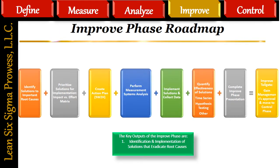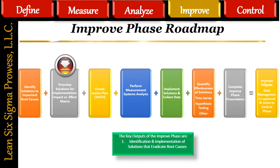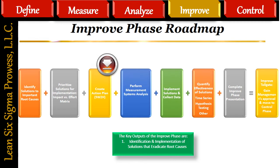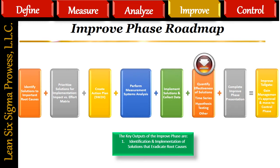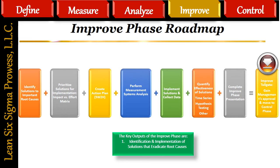The Improve Roadmap is a summary of all of the steps required to complete the Improve phase. Step 1: Identify solutions to important root causes. Step 2: Prioritize solutions for implementation using the impact versus effort matrix. Step 3: Create an action plan (5W2H) for improve implementation. Step 4: Perform Measurement Systems Analysis — any gauge used must be reliable and accurate; if not, it must be calibrated or replaced. Step 5: Implement solutions and collect data. Step 6: Quantify effectiveness of solutions — the before versus after improvement comparison, using time series charts and hypothesis testing. Step 7: Complete the Improve phase presentation. Step 8: Improve Tollgate — gain management's approval and move to the Control phase.